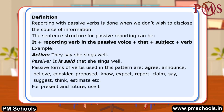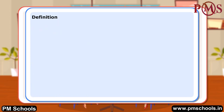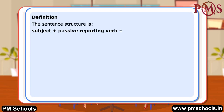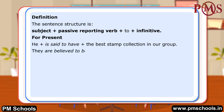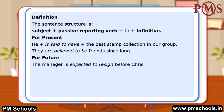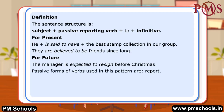For present and future, use the to infinitive — to be, to have, to dance. The sentence structure is: subject plus passive reporting verb plus to plus infinitive. For present: He is said to have the best stamp collection in our group. We are believed to be friends since long. For future: The manager is expected to resign before Christmas. Passive forms of verbs used in this pattern include: report, believe, think, understand, say, expect, hope, etc.